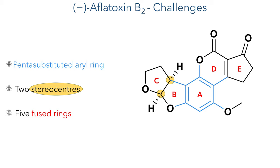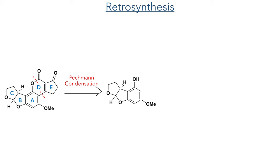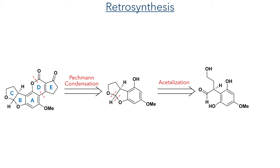So let's look at the retrosynthesis. The first disconnection occurs between the A ring and the D and E rings, which could be installed using a Peckham condensation. This leads back to a tricyclic intermediate which can be disconnected at the C and B rings through an acetalization reaction.